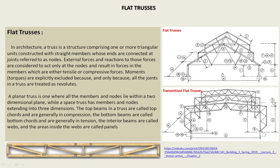External forces and reactions to those forces are considered to act only at the nodes and result in forces in the members which are either tensile or compressive. Moments are explicitly excluded because all the joints in the truss are treated as revolutes. A planar truss is one where all members and nodes lie within a two-dimensional plane, while a space truss has members and nodes extending into three dimensions. The top beams in the truss are called top chords and are generally in compression. The bottom beams are called bottom chords and are generally in tension.